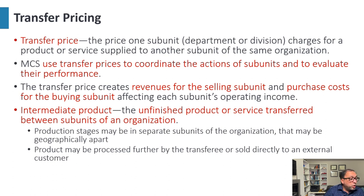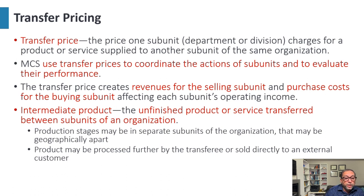An intermediate product is an unfinished product or service transferred between subunits of the organization. Production stages may be in separate subunits that are geographically apart. The product may be processed further by the receiving subunit or sold directly to an external customer.